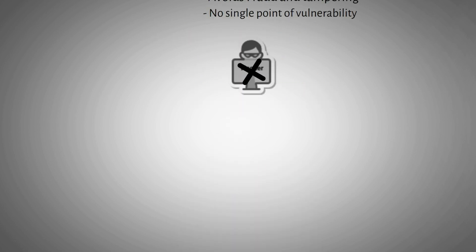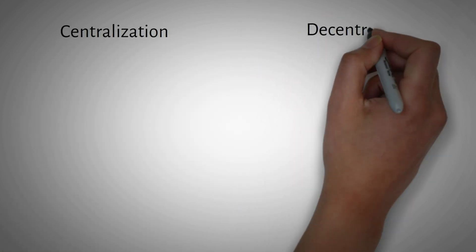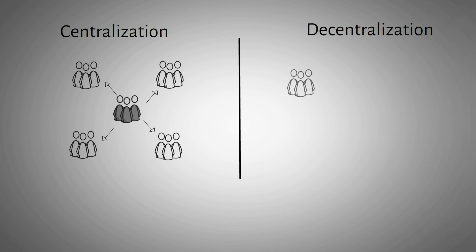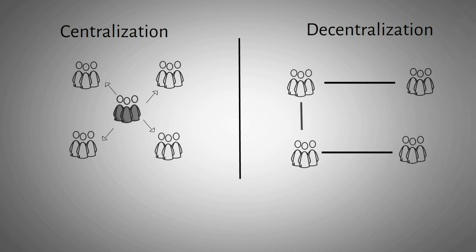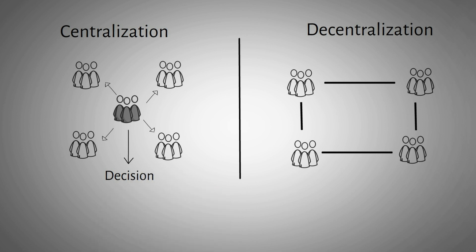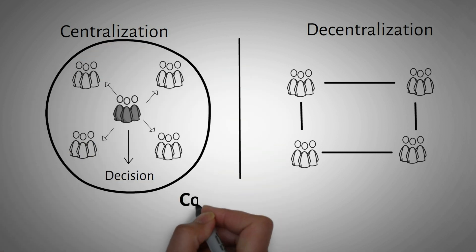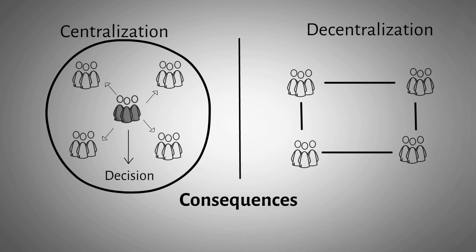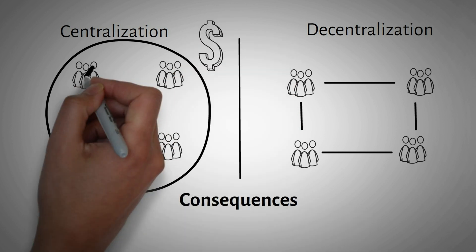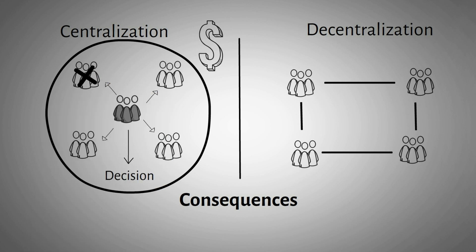There are key differences between centralization and decentralization. In a centralized organization, authority and decision-making power are concentrated in a group of people. The decisions made affect the entire company — good decisions bring good rewards, but bad decisions bring negative consequences, as we have recently seen with layoff trends in big tech companies.